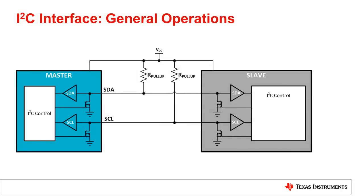The I2C bus is a bidirectional interface that uses a controller, known as the master, to communicate with the slave devices. The physical I2C interface consists of a serial clock, SCL, and a serial data line, SDA. Both SDA and SCL lines must be connected to VCC through a pull-up resistor.